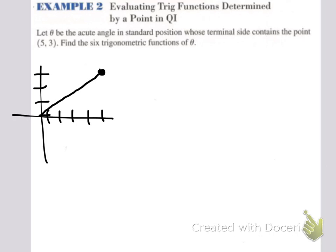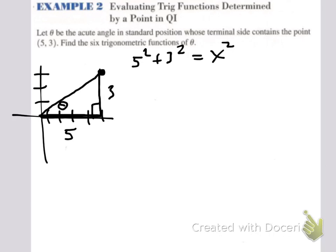The terminal side goes through that point. The initial side is the positive x-axis. The horizontal length is going to be 5. Let's form our right triangle — the vertical length is 3, and here is theta. The only thing missing is the hypotenuse, and we'll get that using the Pythagorean theorem: 5 squared plus 3 squared equals x squared. 25 plus 9 equals 34, so x equals the square root of 34. That is the hypotenuse.